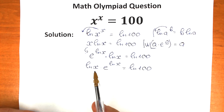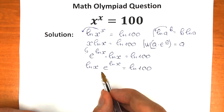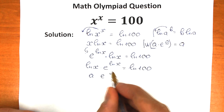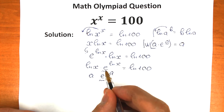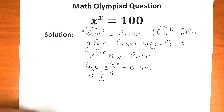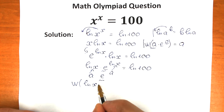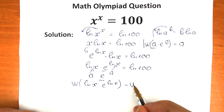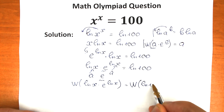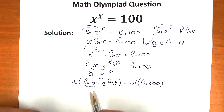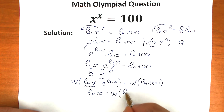Now let's apply the Lambert W function. We have natural log x times e to the power natural log x — this matches the form a times e to the power a — equal to natural log 100. So: Lambert W of natural log x times e to the power natural log x equals Lambert W of natural log 100. Since this is exactly the Lambert W function case with the same expression in both positions, it simplifies to: natural log x equals Lambert W of natural log 100.